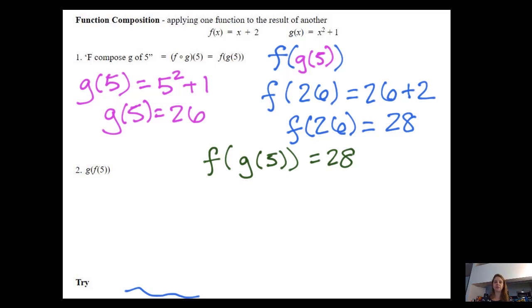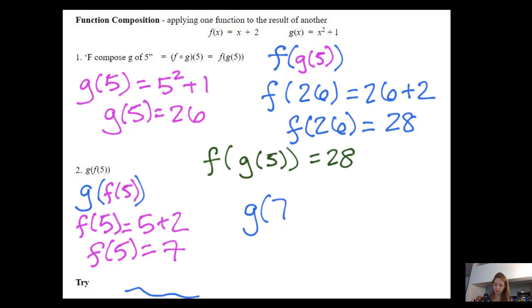And we'll do that again. But now you'll see that we have G composed F of five. So I'm going to do a color coding. So we have G of whatever F of five is. And so let's start with F of five is going to be five plus two. Therefore, F of five is going to be seven. Then G of seven is going to be seven squared plus one. G of seven equals 50. Therefore, I can write G of F of five equals 50.